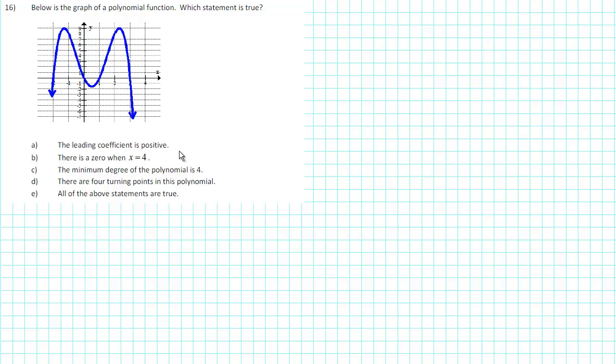Well, first of all, read the statements and identify the key terms. The key terms are leading coefficient, zero, degree, and turning points. So we'll want to pay careful attention to how those terms relate to the graph as we go along.